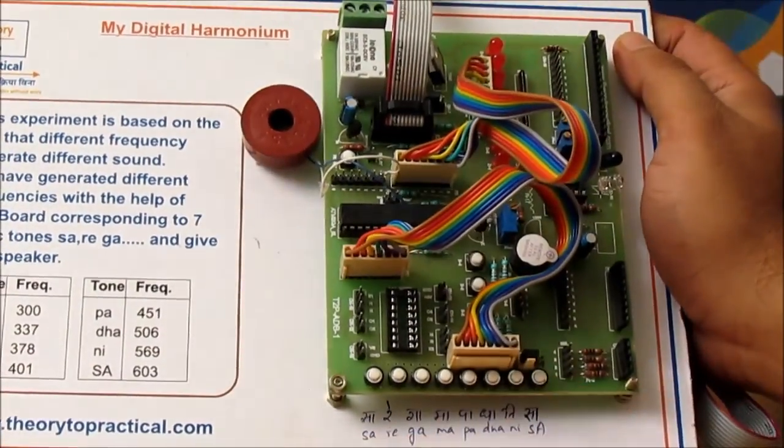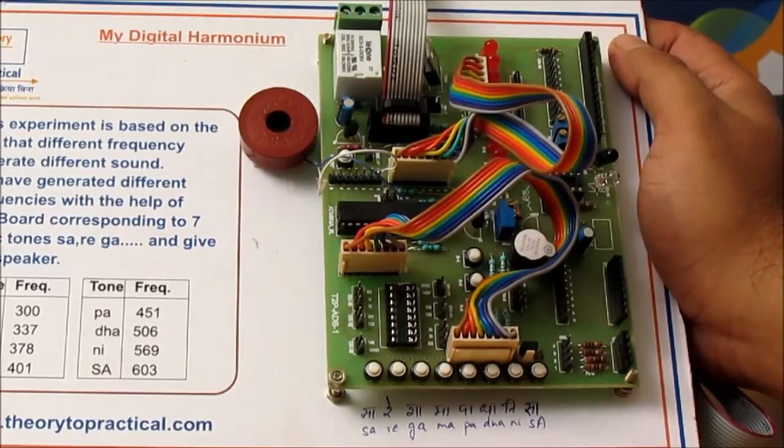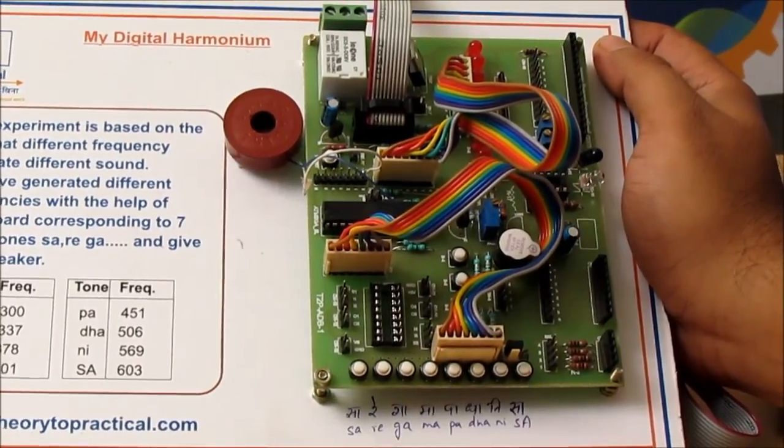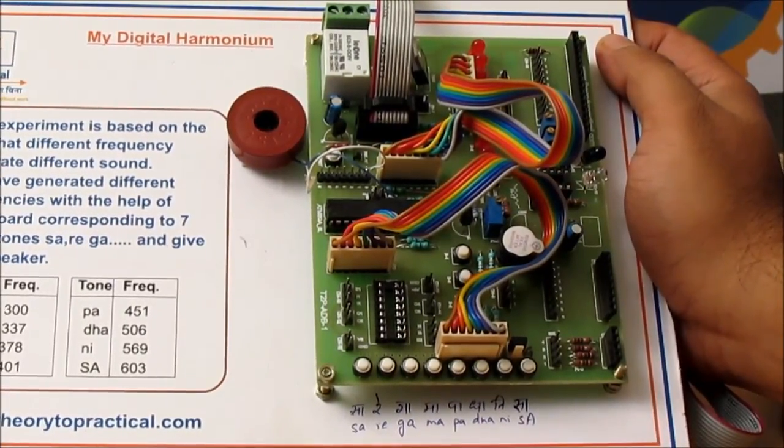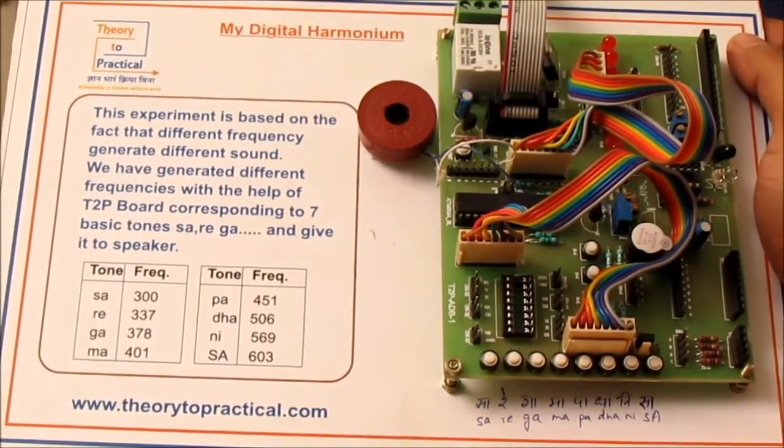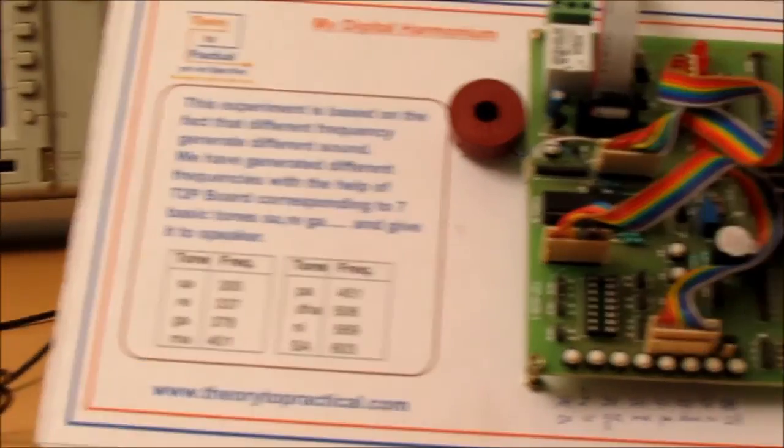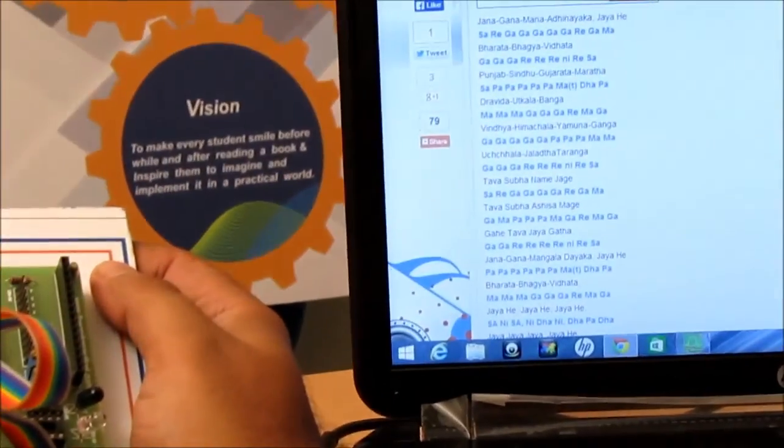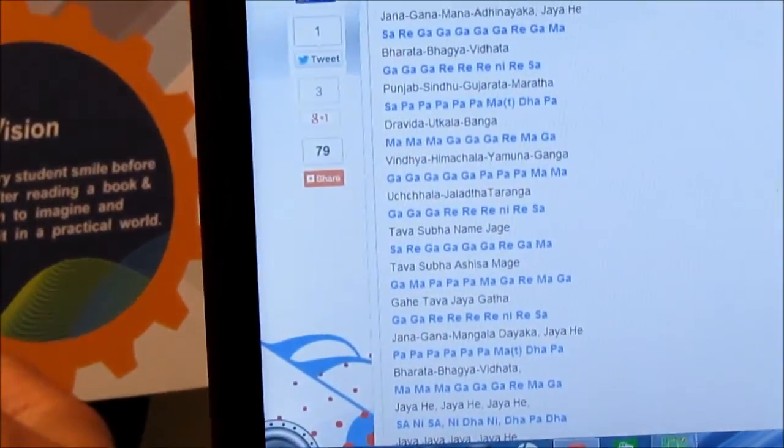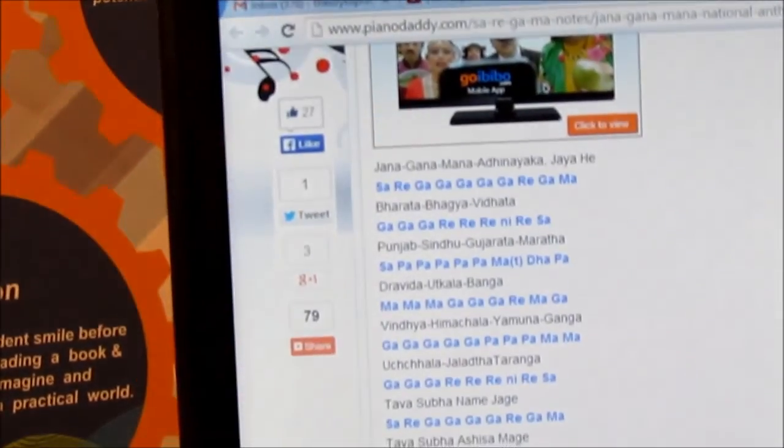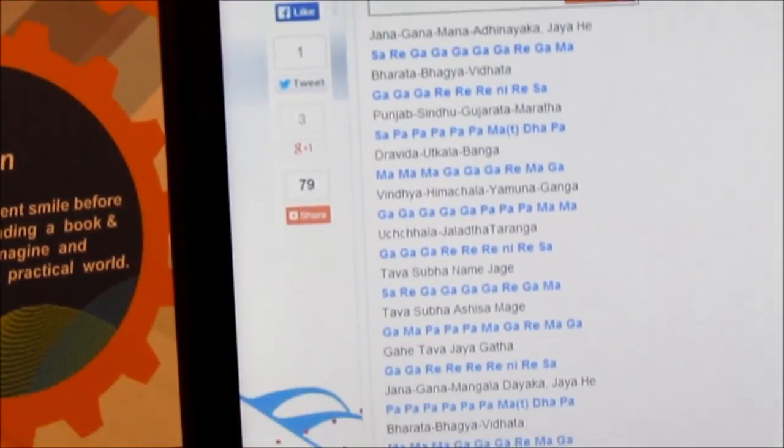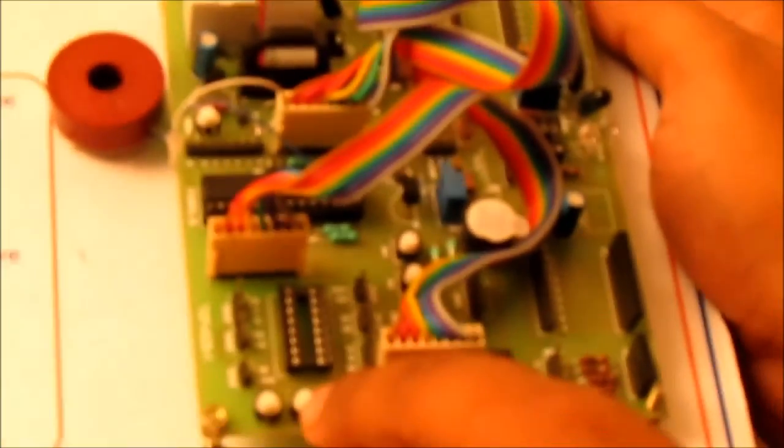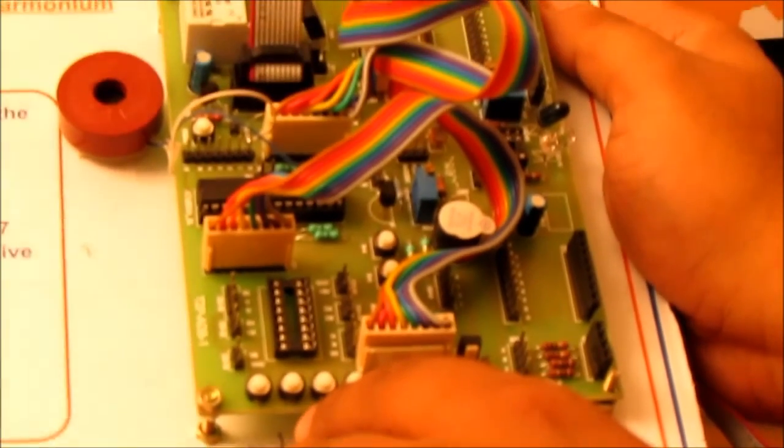In addition to that, you can also play music. You can play songs like we have Jana Gana Mana Adhinayaka Jaya Hai, our national song. So you can go to pianoready.com and you will get the notes for this song. So here it goes like Jana Gana Mana Adhinayaka Jaya Hai, so it is sa re ga...